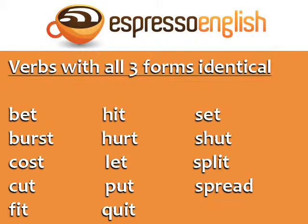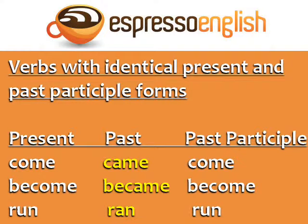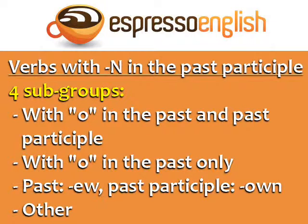The next group is verbs with identical present and past participle forms. The only different form is the past. Come — came — come. Become — became — become. Run — ran — run.